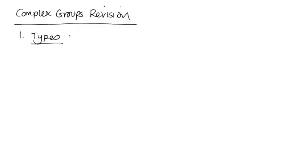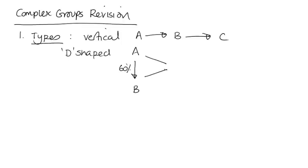In terms of the types of complex group that we can see, there's a vertical where we've got A has control of B, has control of C. And we then have what's sometimes referred to as the D-shaped or the mixed vertical group. We might have A having 60% of B, and then A has 20% of C and B has 35% of C.